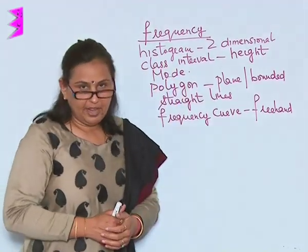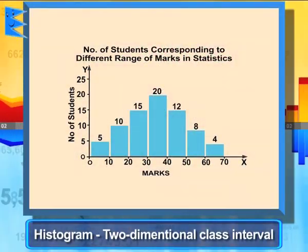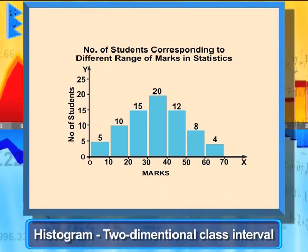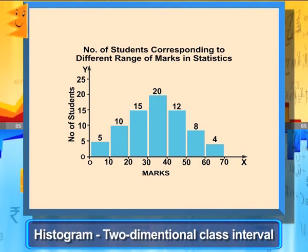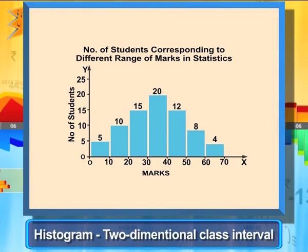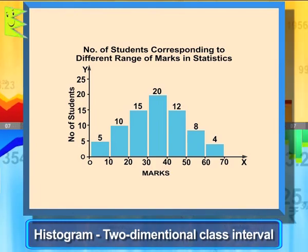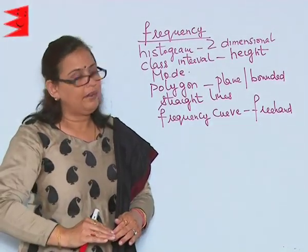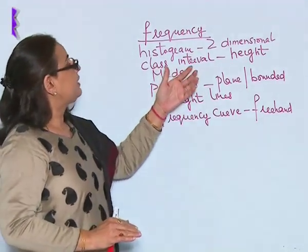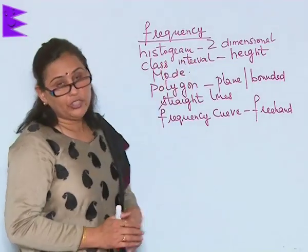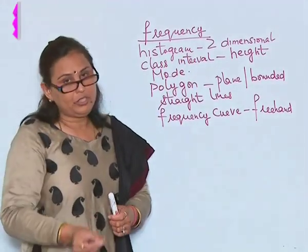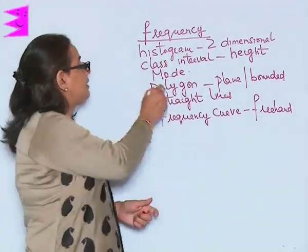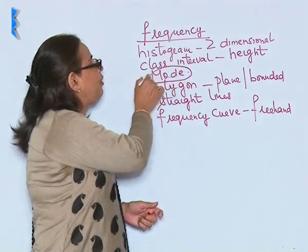Histogram is a two-dimensional class interval presentation. What matters is the height of the bar that indicates the rise or fall. The midpoint, which comes in the calculation of mode, is also important.